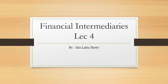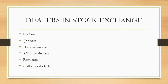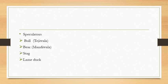The financial intermediaries and especially the dealers in stock exchange — in this slide you can see there are various types of dealers: brokers, jobbers, tarainiwalas, outlaw dealers, remisers, authorized clerks, and importantly, speculators. Speculators include bull, bear, stag, and lame duck. We are going to study each of these in detail.